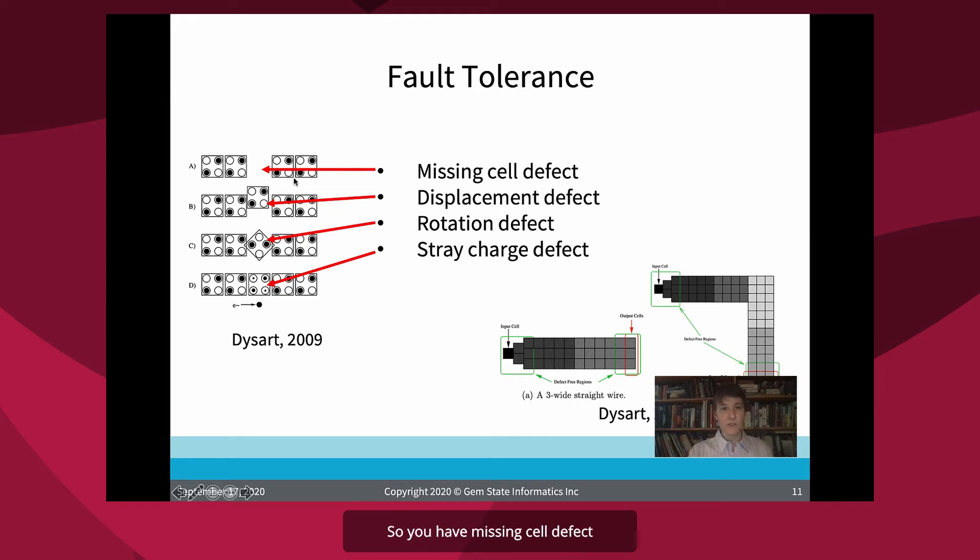So you have a missing cell defect where there's just one that doesn't show up. There can be a cell that's off line, a rotation. You could have one there's a stray charge in the environment that messes with the transfer of the configuration, the data bit.